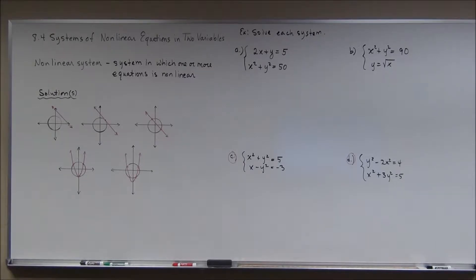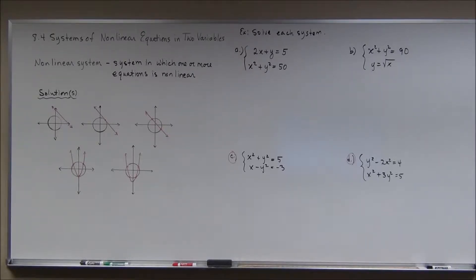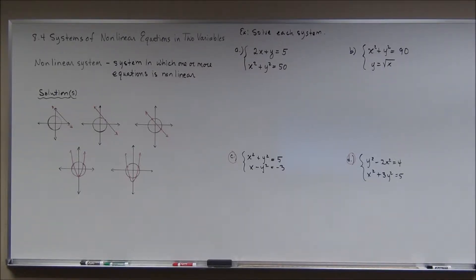We're going to get into section 8.4 on systems of nonlinear equations in two variables. Back in section one of this chapter we did systems of linear equations in two variables, but a nonlinear system is a system in which one or more of the equations is nonlinear — they might both be nonlinear, or you might have one that's a line and one that's something else. A solution to a system is an ordered pair that satisfies all equations in the system. When you have a nonlinear system, there are five different possible outcomes.